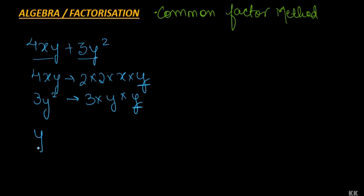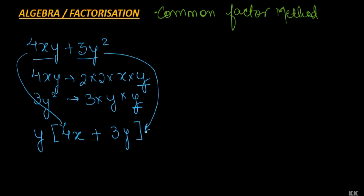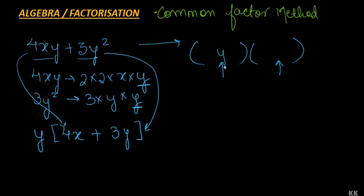Whatever is the common factor, we take it out and then apply the law of distribution to write the remaining terms in the bracket. From the first term, when y goes out we are left with 4x; from the second term we are left with 3y. So we are able to write 4xy plus 3y square in the form of something into something — y into 4x plus 3y.